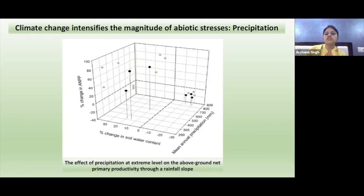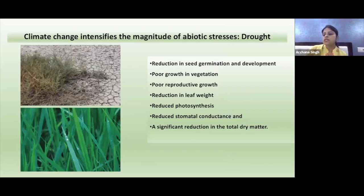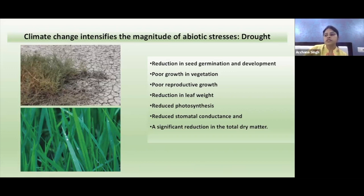Climate change also causes change in precipitation patterns, leading to water scarcity or flooding. Climate change intensifies the magnitude of drought. During drought, plants face reduction in seed germination, poor vegetative growth, poor reproductive growth, reduction in leaf weight, reduced photosynthesis, reduced stomatal conductance, and a significant reduction in total dry matter. A wild plant growing under drought conditions shows poor growth because of the physiological and biochemical stresses it faces.